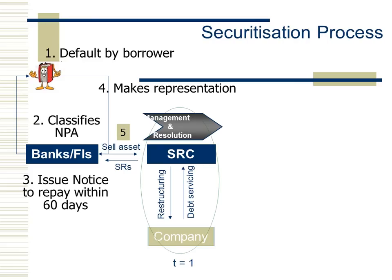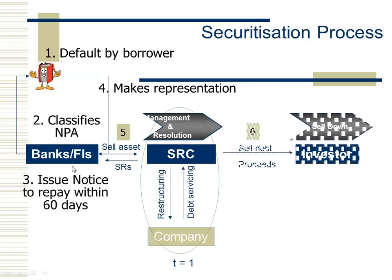In the restructuring activity, the ARC purchases the loan asset — which is a bad asset or NPA — from the banks and financial institutions. Just like purchasing a debt, it issues an acknowledgement called Security Receipts (SR). The banks or financial institutions transfer the loan asset to the reconstruction company, and the acknowledgement is given in the form of Security Receipts, which are termed as securities as per the Securities Contract Regulations. The money for this purpose is provided by an investor — a Qualified Institutional Buyer (QIB).